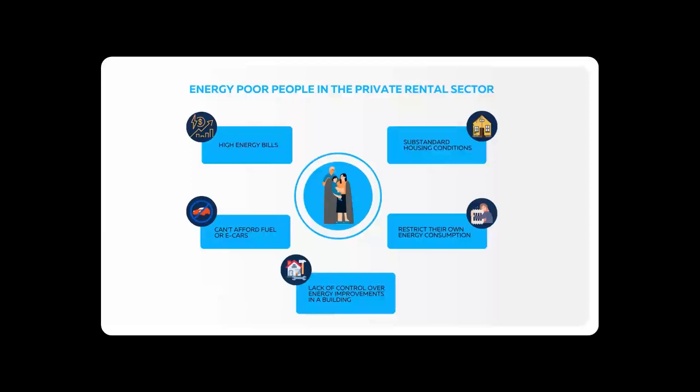They face high energy bills, which is not very different from other sectors, and they can't afford fuel or energy costs. They also live, and that was one of the key findings, in substandard housing conditions. And through the co-creation method, we also learned that they restrict their own energy consumption. But most importantly, they lack control over energy efficient renovation of the building where they live.